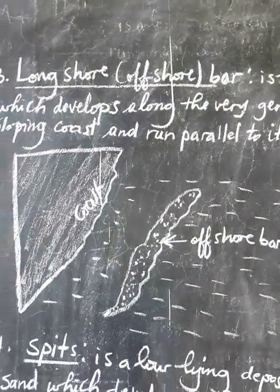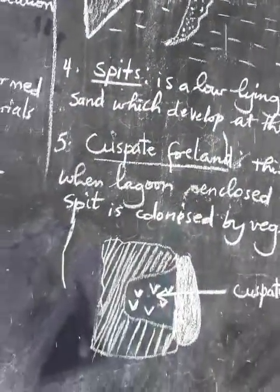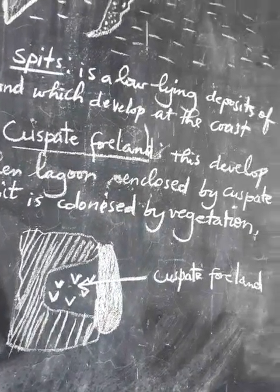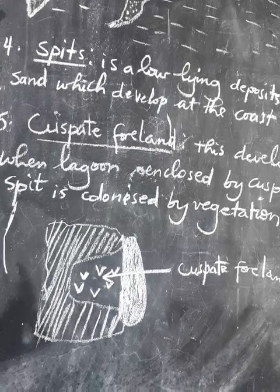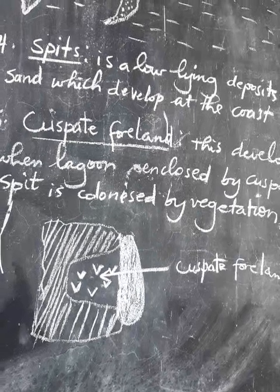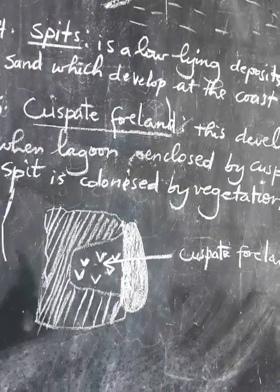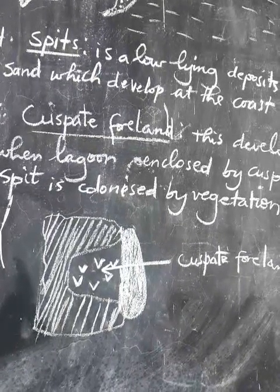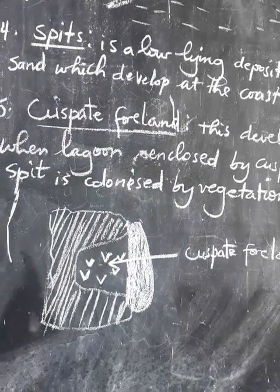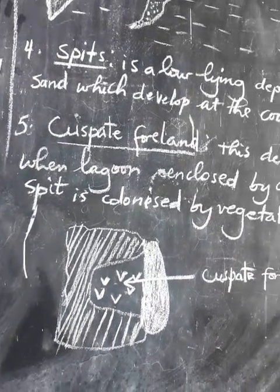Feature number four is a spit. A spit is a narrow elongated deposit of sand which develops at the coast. A wave brings sand and weathered particles and deposits them at the coast, resulting in the formation of a narrow elongated deposit at the coast. That is what we call a spit.